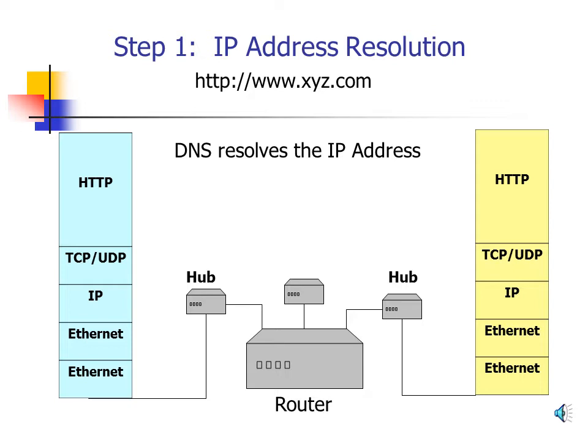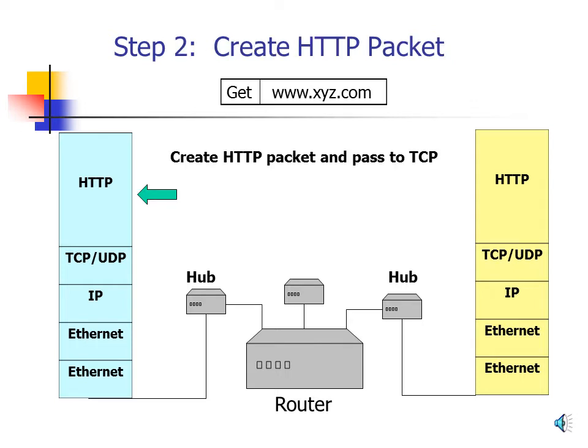The DNS server retrieves that information and returns the IP address to the client computer. Step 2: Creating the HTTP Packet. Now that we have the IP address of the web server, the web browser on the client creates an HTTP packet. Because this is a request for a website, it creates an HTTP GET packet and includes the fully qualified domain name of the website it's trying to access. Once created, this packet is passed to the TCP program.